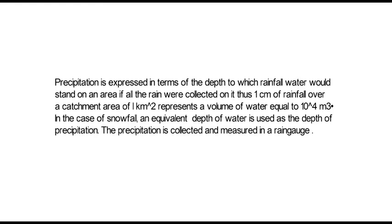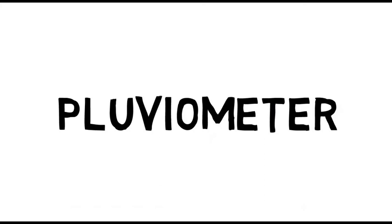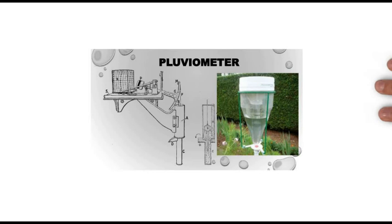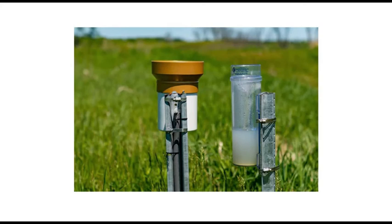Terms such as pluviometer, ombrometer, and hyetometer are sometimes used to designate a rain gauge.